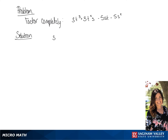We are going to factor 3t cubed plus 3t squared s minus 5st minus 5s squared. The first thing we're going to do is group the last two terms together as well as the first two terms. From the first two terms we can pull out 3t squared, leaving us with t plus s.